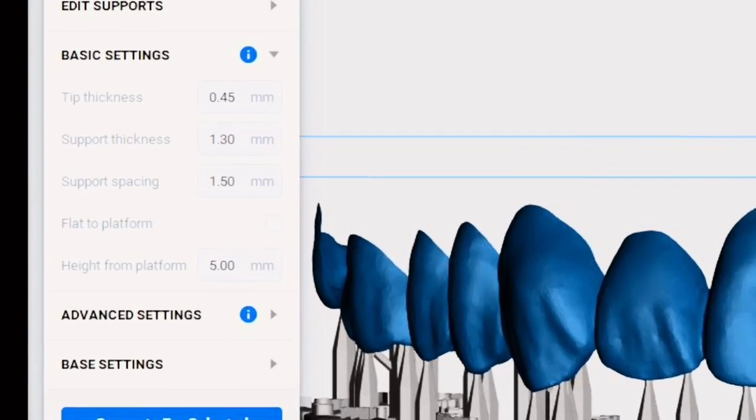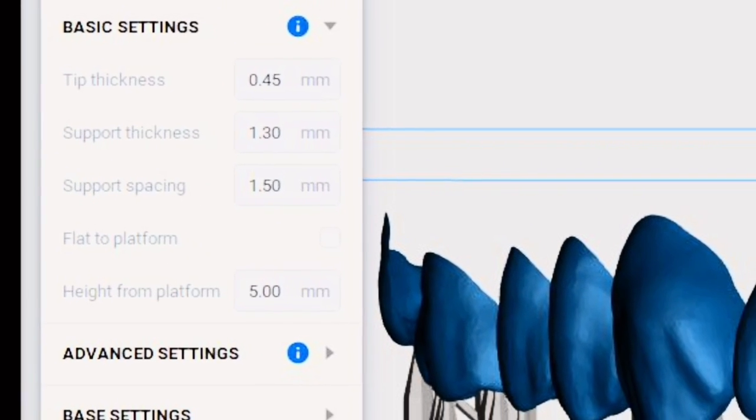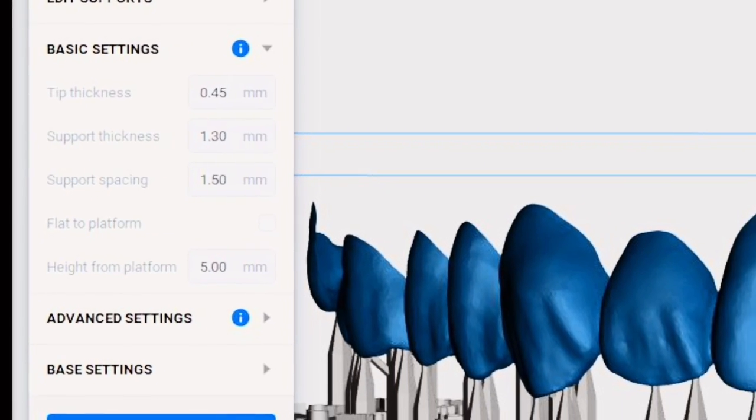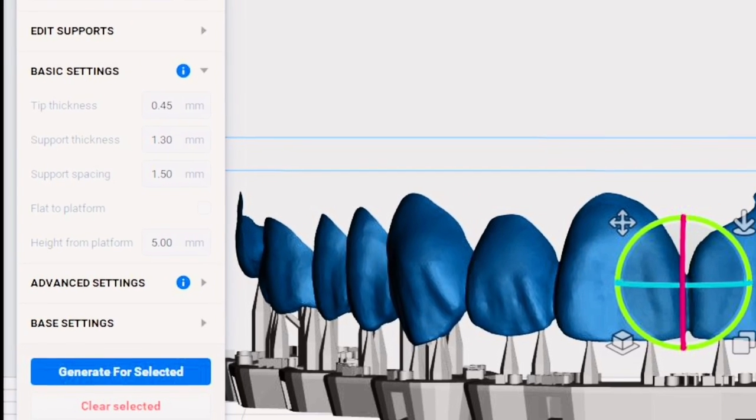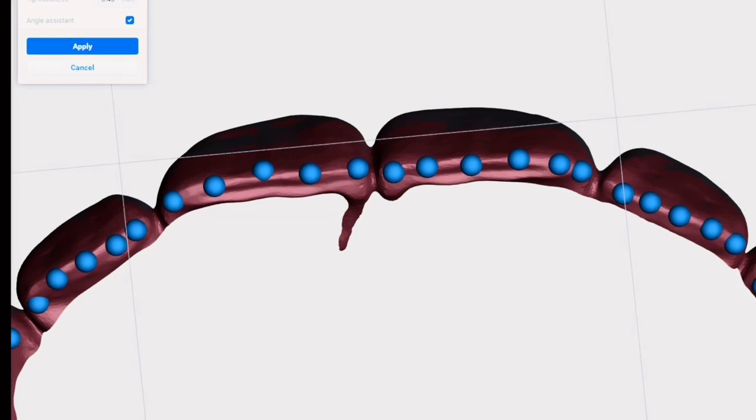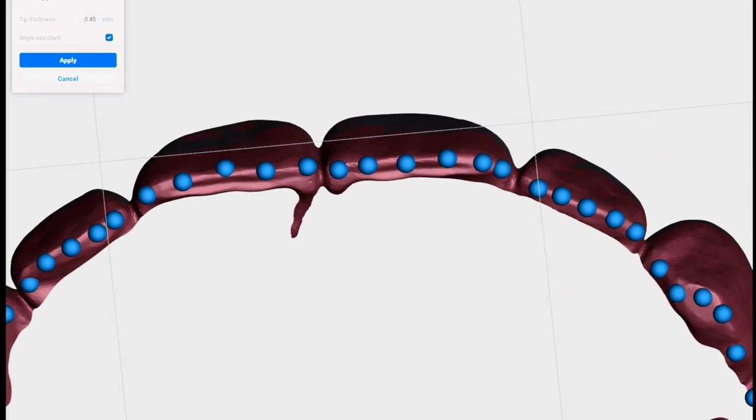For Flexera Smile we kind of cheat a little bit and we cut the support tip diameter down to 450 microns. These are basically needle-like tips and if you do this you have to remember to increase your support density. This is the spacing that I recommend for Flexera Smile Ultra Plus, whether you're printing teeth or dentures or veneers.